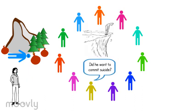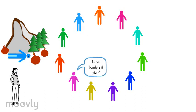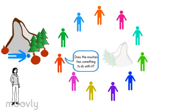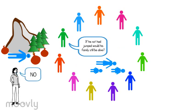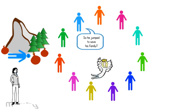Did he want to commit suicide? No. Is his family still alive? Yes. Does the mountain have something to do with it? Yes. If he not had jumped, would his family still be alive? No. So he jumped to save his family? Yes.